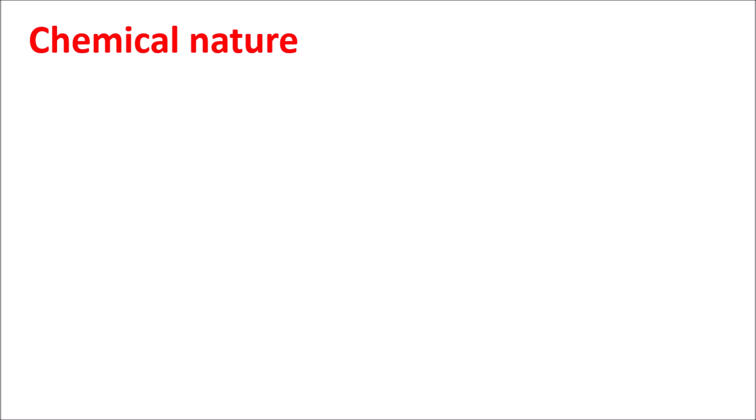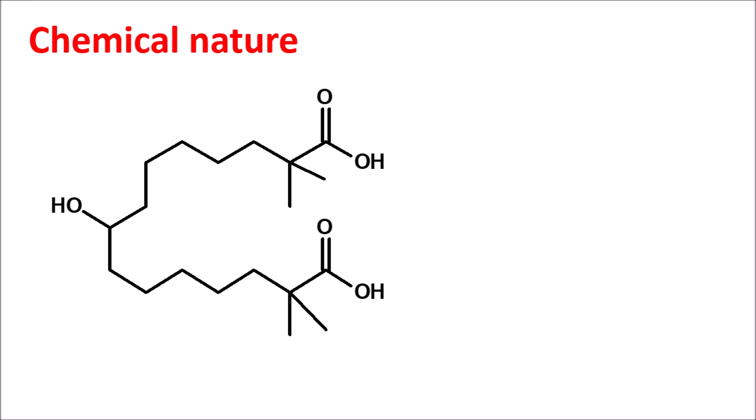What is the chemical nature of Bempedoic acid? This is the structure of Bempedoic acid. We can clearly observe that this structure has carboxylic acid groups at two positions.